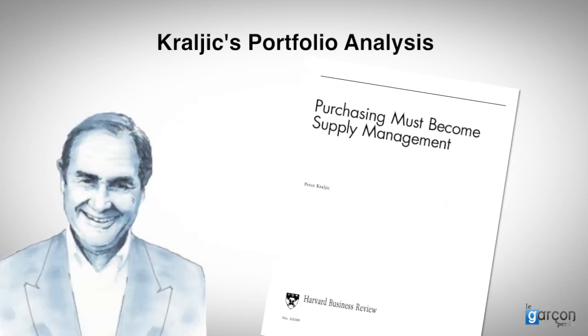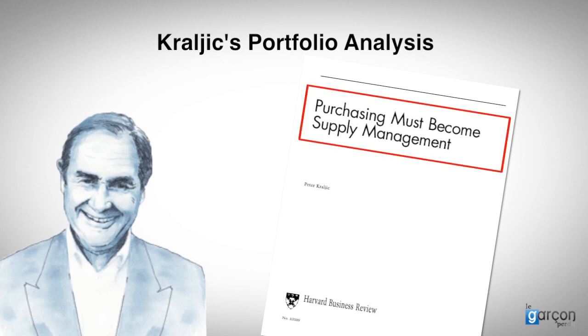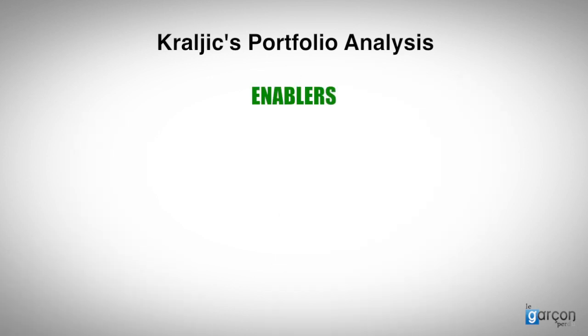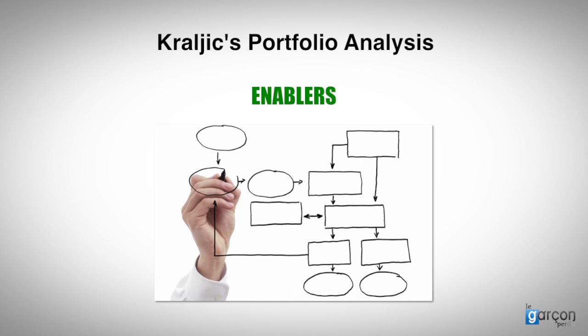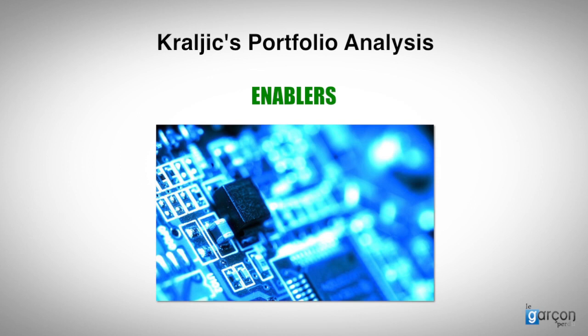Kralich finished his article by addressing a number of prerequisites to make change happen. Remember he called the article 'Purchasing must become supply management', and the journey required a number of enablers. People: procurement people have to be entrepreneurial and able to influence key decision makers, both inside and outside their own organisation, and coordinate others. Process: the procurement process must be flexible enough to allow coordination of key strategies, and create a portfolio of strategies, not a series of deals. Technology: the information provided to the procurement department needs to be reliable, and allow early involvement of procurement thinking in major projects.